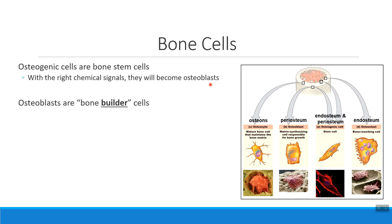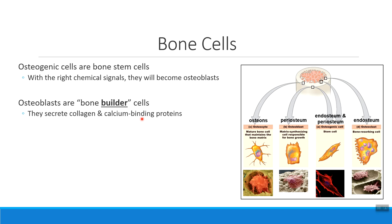Osteoblasts are my bone builders — that's what the part 'blast' means, a builder. Osteoblasts spit out collagen proteins that give our bones their tensile strength, and they also spit out proteins that can grab calcium out of your bloodstream. The way a bone builder helps to build new bones is essentially laying down that rebar that's going to call over extra calcium to lay it down.